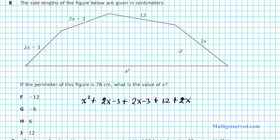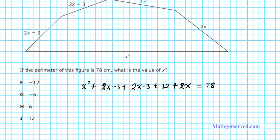Now we combine like terms. We have one squared term: x squared. Then we combine the first-degree terms: 2x plus 2x plus 2x gives us 6x. Then the constants: negative 3 minus 3 plus 12 — negative 3 minus 3 is negative 6, and adding 12 gives us plus 6. So we have x squared plus 6x plus 6 equals 78.